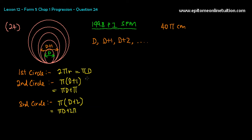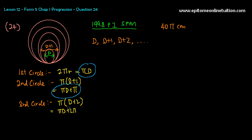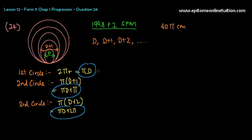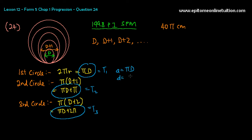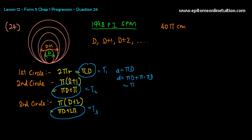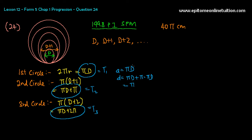So T1 is πD, T2 is π(D+1) which is πD plus π, and T3 is πD plus 2π. This is your AP for the circumference of the circles. So A is πD, and the common difference d is π(D+1) − πD, which gives you π. So A equals πD and d equals π.